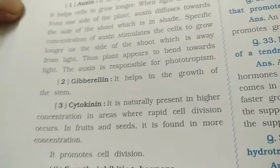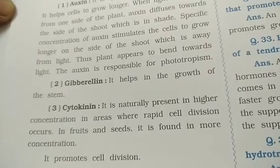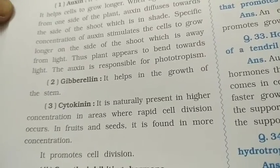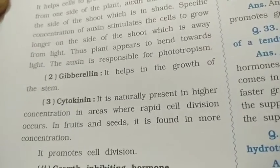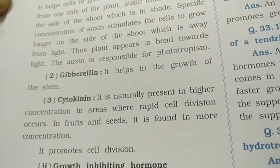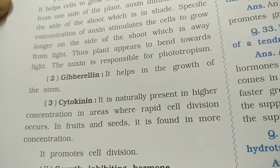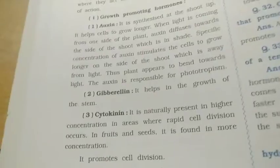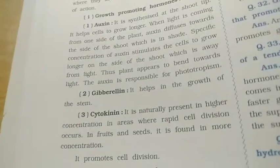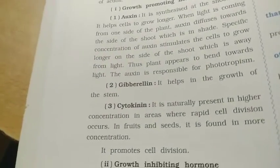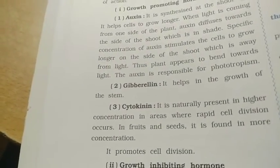The third growth-promoting hormone is cytokinin. It is naturally present in higher concentration in areas where rapid cell division occurs — in fruits and seeds it is found in greater concentration. It promotes cell division. Cell division is the key role of cytokinin.